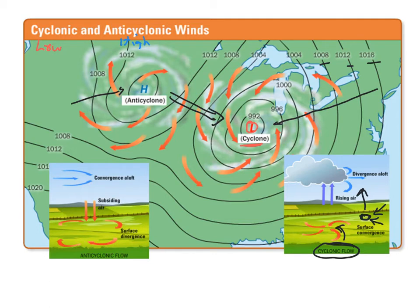That's where we see this cyclonic flow, where air blows in towards the middle of the low pressure. Because it's slightly warmer it's going to rise up, and above we have divergence. So the air flows in along the ground, goes up, and then spreads out. That's our cyclonic flow — we can see the wind blowing in towards the lows, and that helps us predict air direction.